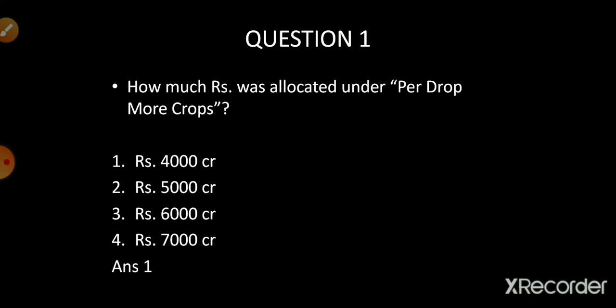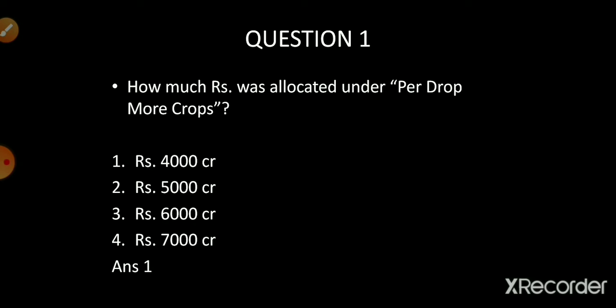The second question: under PM KSCY (Pradhan Mantri Krishi Sinchai Yojana), the corpus of the micro irrigation fund created in NABARD is how much? The options are ₹5000 crore, ₹8000 crore, ₹10,000 crore, and ₹2000 crore.